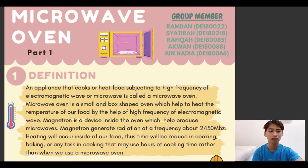The metal interior of the oven helps reflect the microwaves, and the vibration of molecules occurs in the food caused by water molecules. The friction between the molecules produces heat, which increases the temperature of the food.